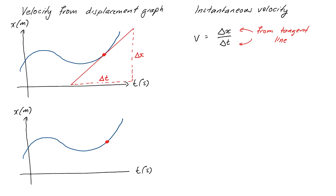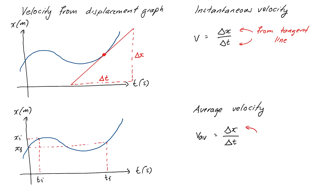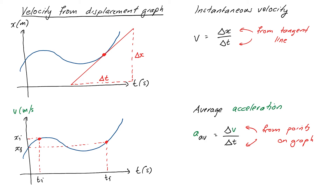We also came up with some formulas that give us average velocity and average acceleration: v average equals delta x over delta t, and average acceleration is delta v over the change in time. For those who've done some calculus before, you might recognize these as derivatives of each other — but we're not covering calculus in this course, so don't worry if you haven't seen that.